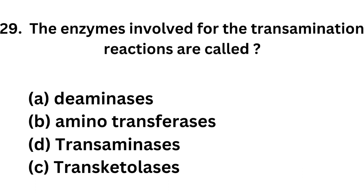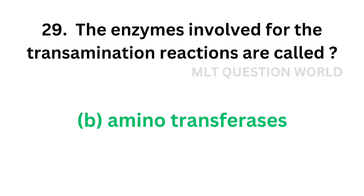Question number 29: The enzymes involved in transamination reactions are called — option A: deaminases, option B: aminotransferases, option C: transaminases, option D: transketolases. The correct answer is option B, aminotransferases. The enzymes involved in transamination reactions are called aminotransferases.